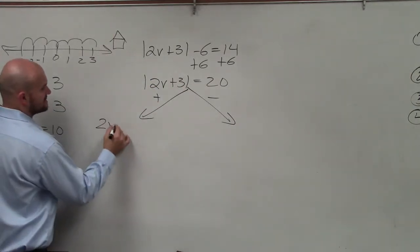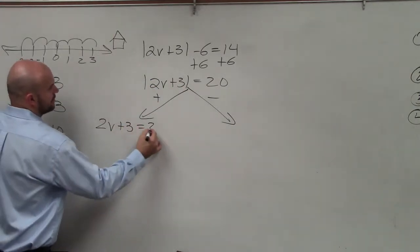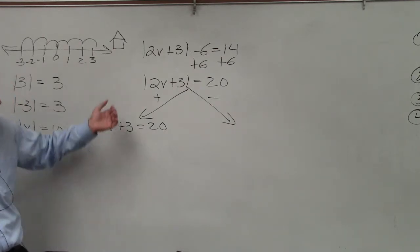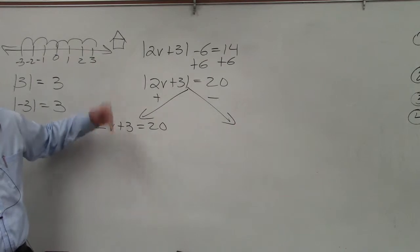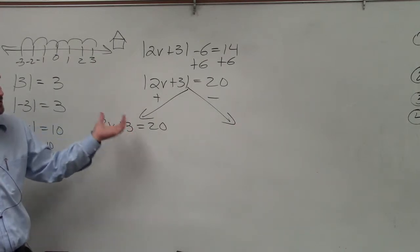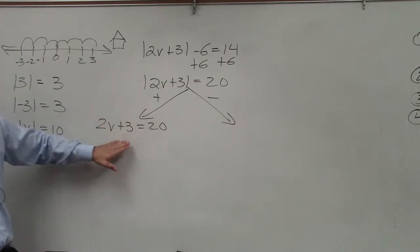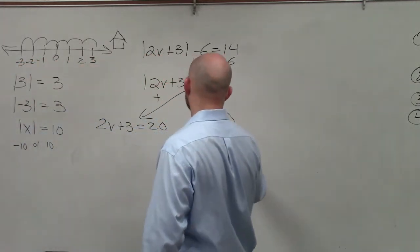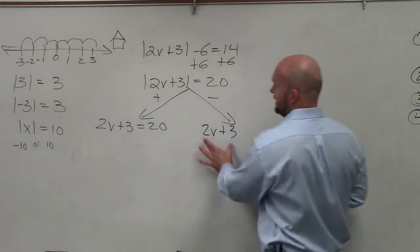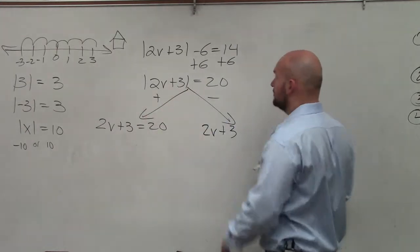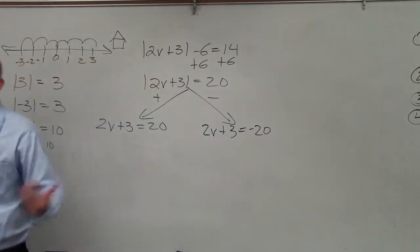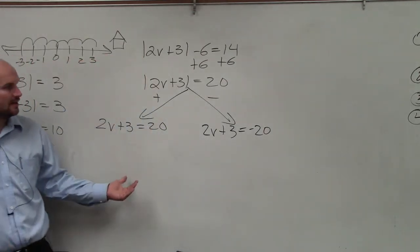So to write the positive case, I'm just going to keep the equation exactly the same. But the important thing is when you create two cases, you don't need the absolute value sign anymore. Absolute value sign just represents absolute distance from zero. So when we create two cases, you don't need that sign. Now to do the negative, I'm going to write the same thing that was inside the absolute value, but now I'm going to take the negation of the other side. Make it the opposite.